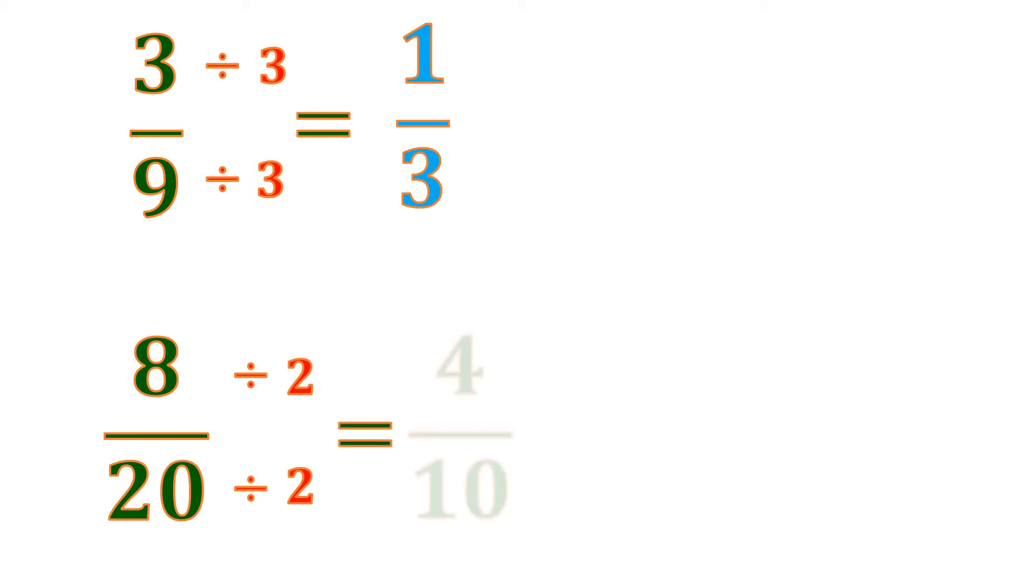8 divided by 2 is 4. 20 divided by 2 is 10. Then 4 and 10 are still divisible by a common number. It's not yet the lowest form. So let's continue dividing. Let's divide 4 and 10 by 2 because they are even. So 4 divided by 2 is 2, and 10 divided by 2 is 5. And then 2/5 don't have a common divisor. So that is the lowest form. So that means 8 over 20 is the same as 2/5, the same as 3/9 is the same as 1/3.